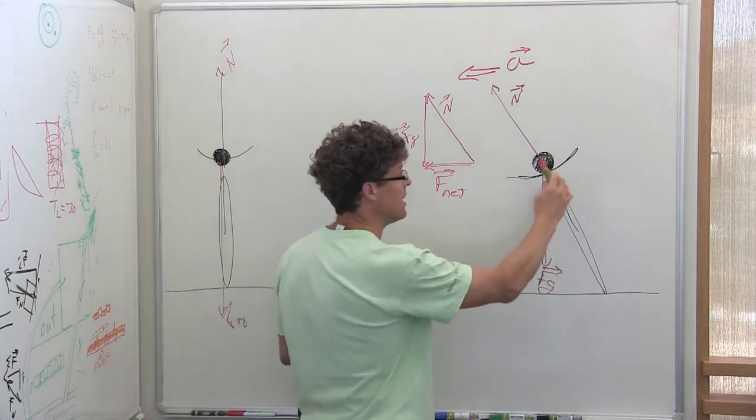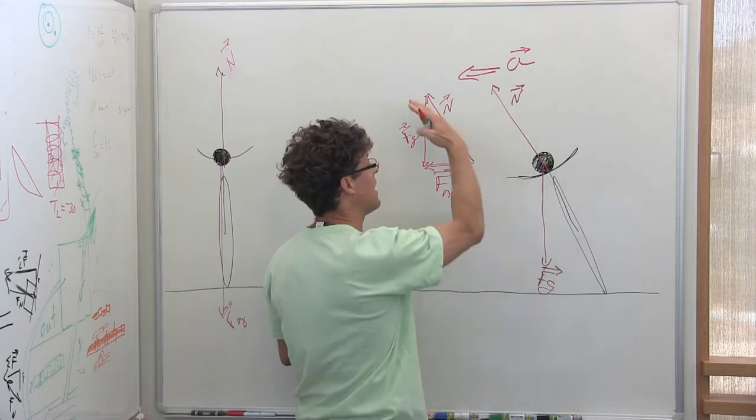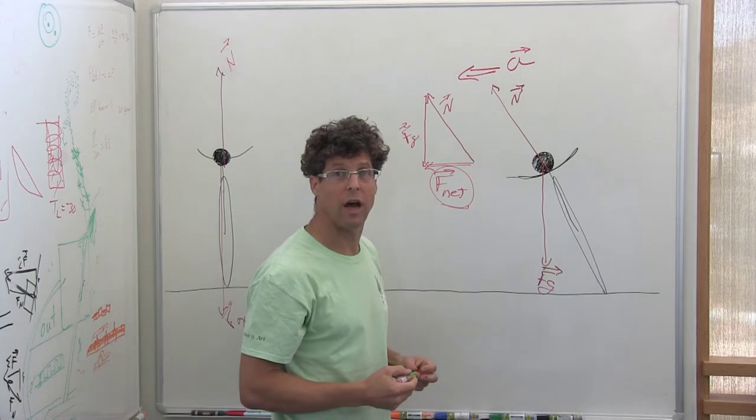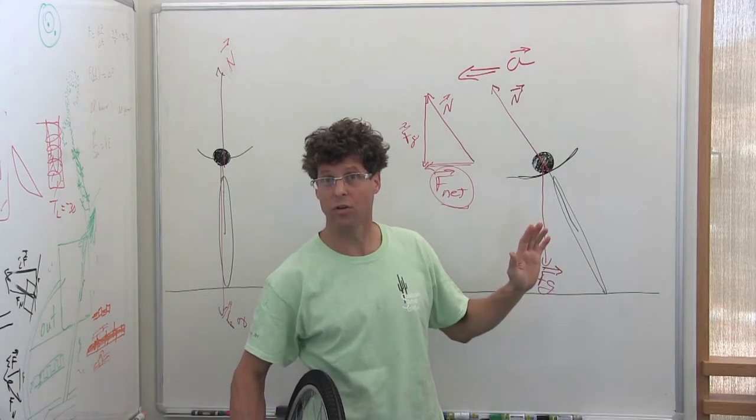So I need to lean in order for the normal force on me to be at an angle resulting in a net force that is not zero in the direction I'm going to accelerate. So this is why we have to lean into a turn.